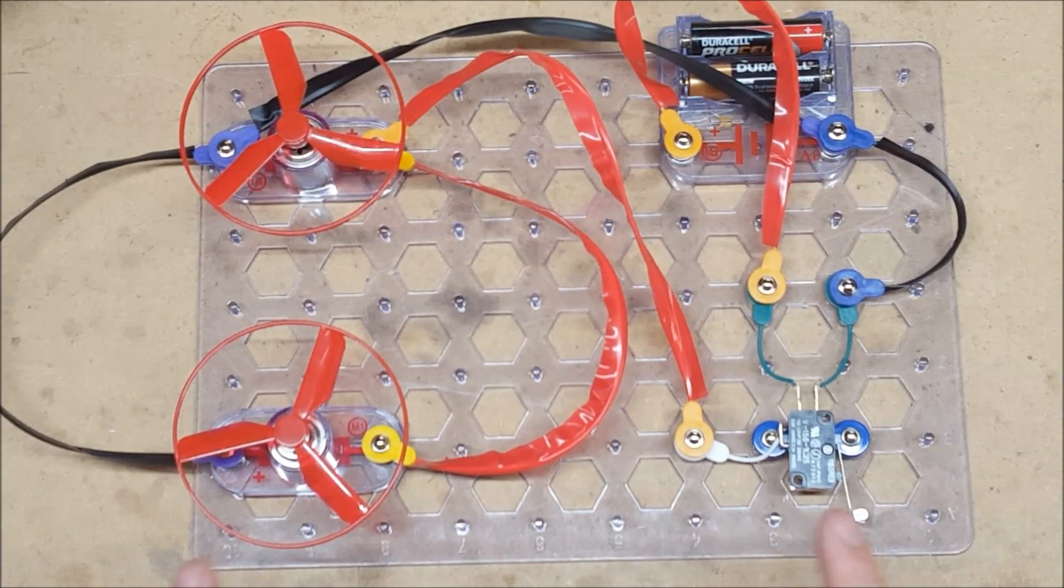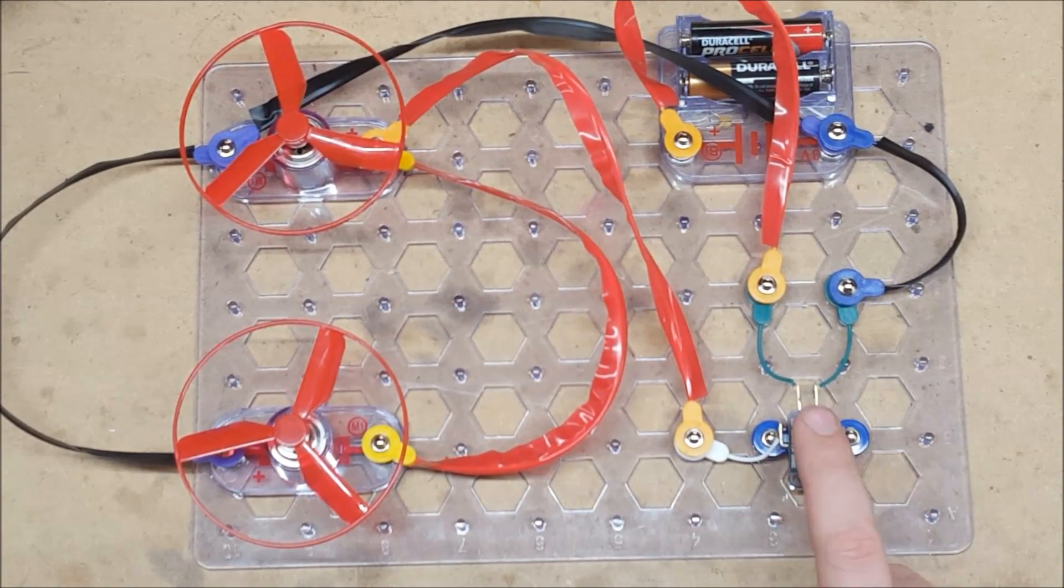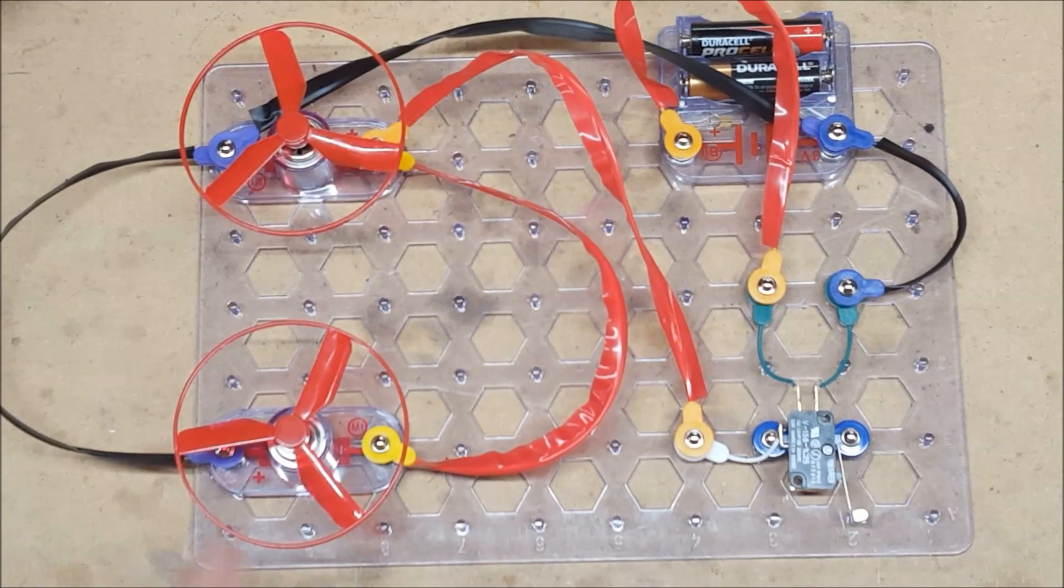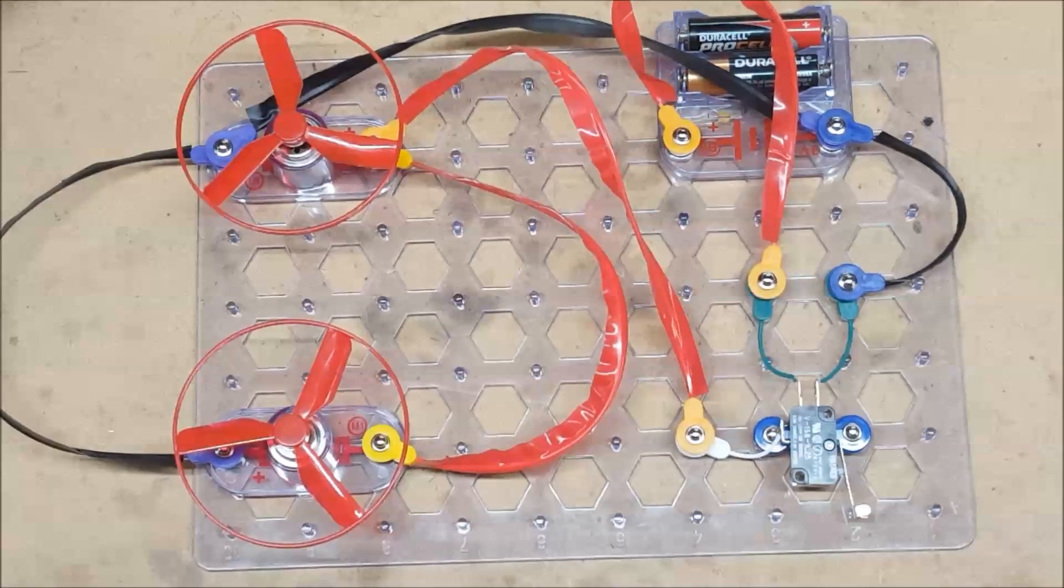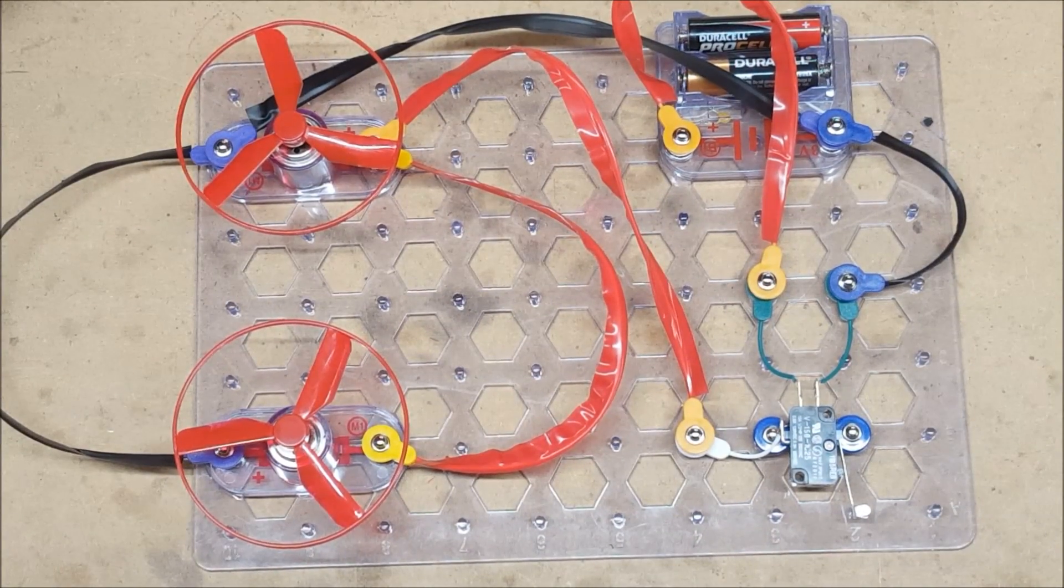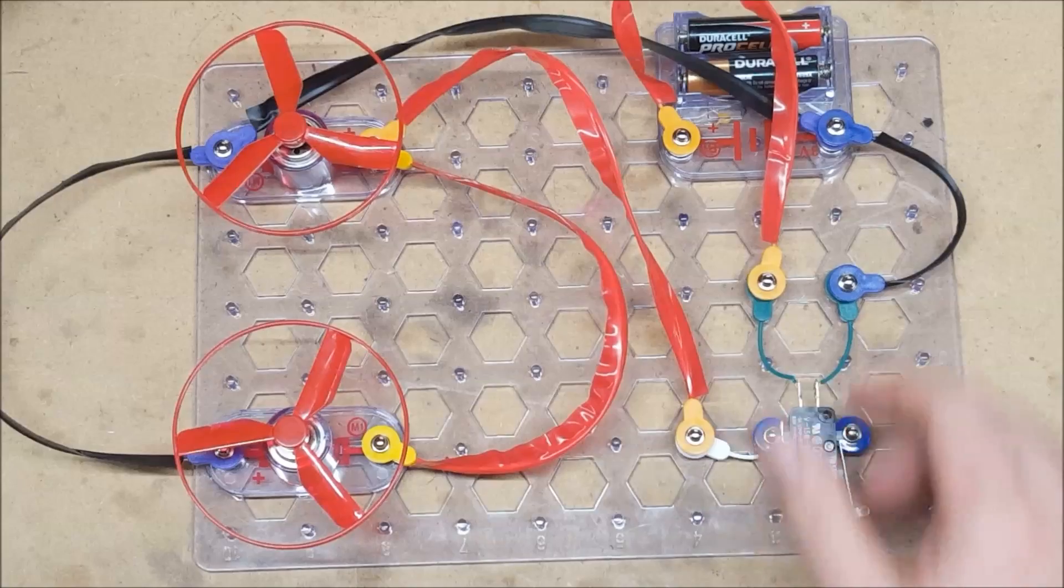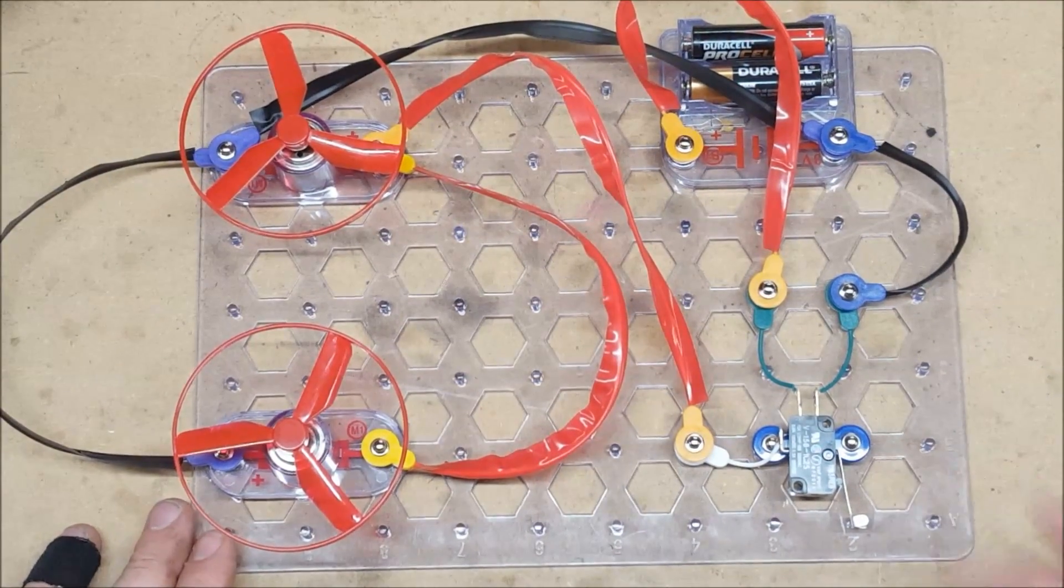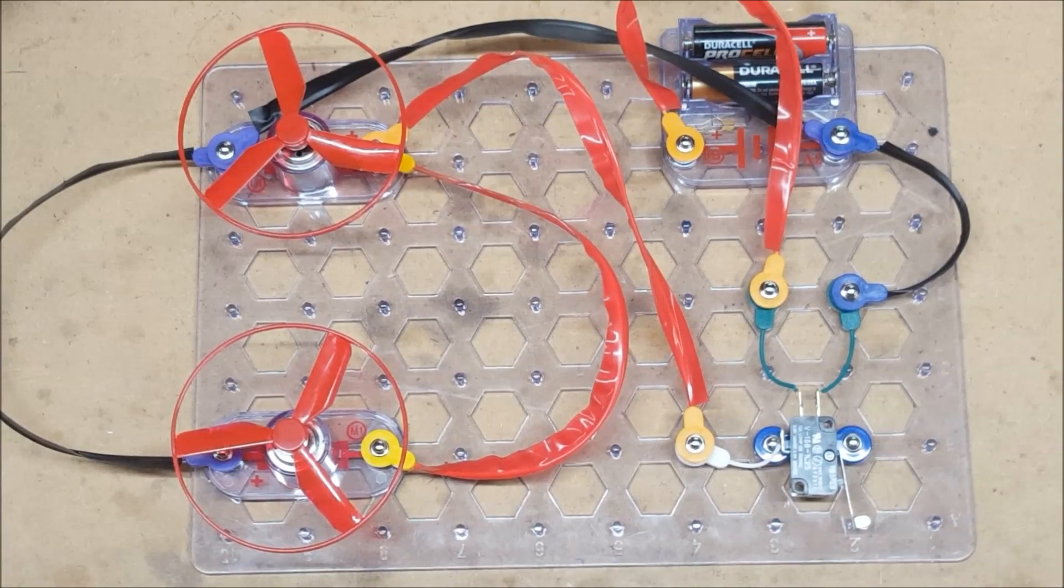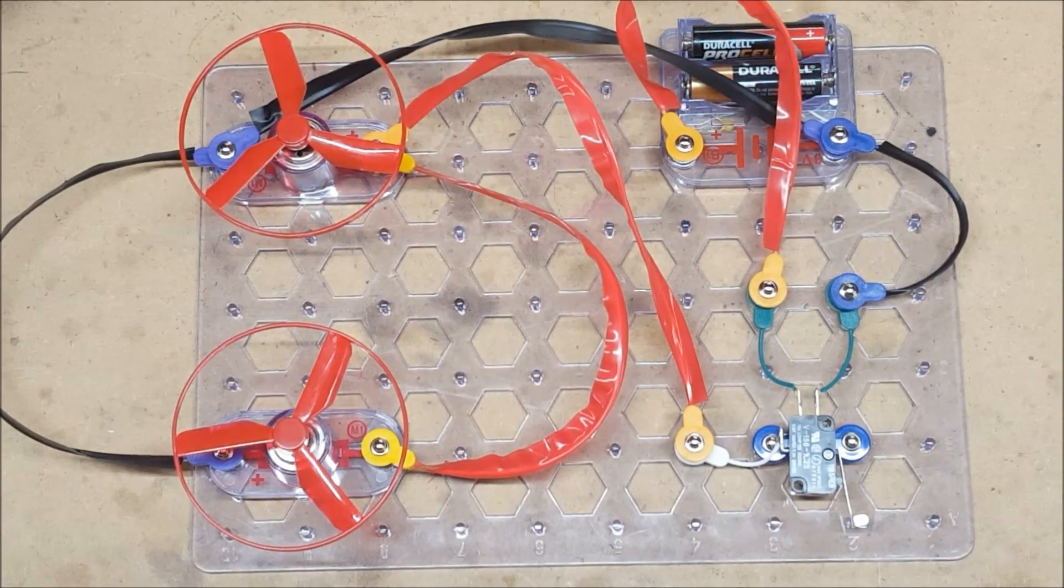But all of them use this same circuit for the REV system. So all of those blasters have a REV switch that goes to the motors in exactly this configuration. They just have different variations on the firing system, whether they use the conveyor belt system or the pusher system. And we will go into that in future episodes.